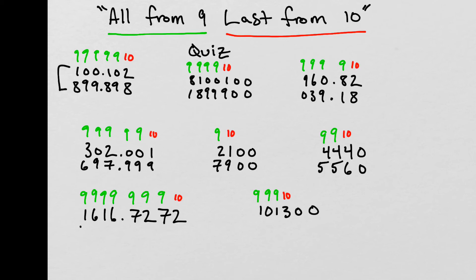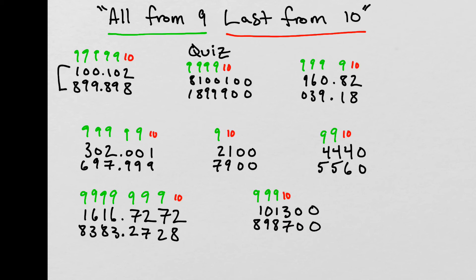Next number: 9 minus 1 is 8, 9 minus 6 is 3, 9 minus 1 is 8, 9 minus 6 is 3. Bring that decimal down. Then 9 minus 7 is 2, 9 minus 2 is 7, 9 minus 7 is 2, and 10 minus 2 is 8. Next problem: 9 minus 1 is 8, 9 minus 0 is 9, 9 minus 1 is 8, and 10 minus 3 is 7. Bring those zeros down.